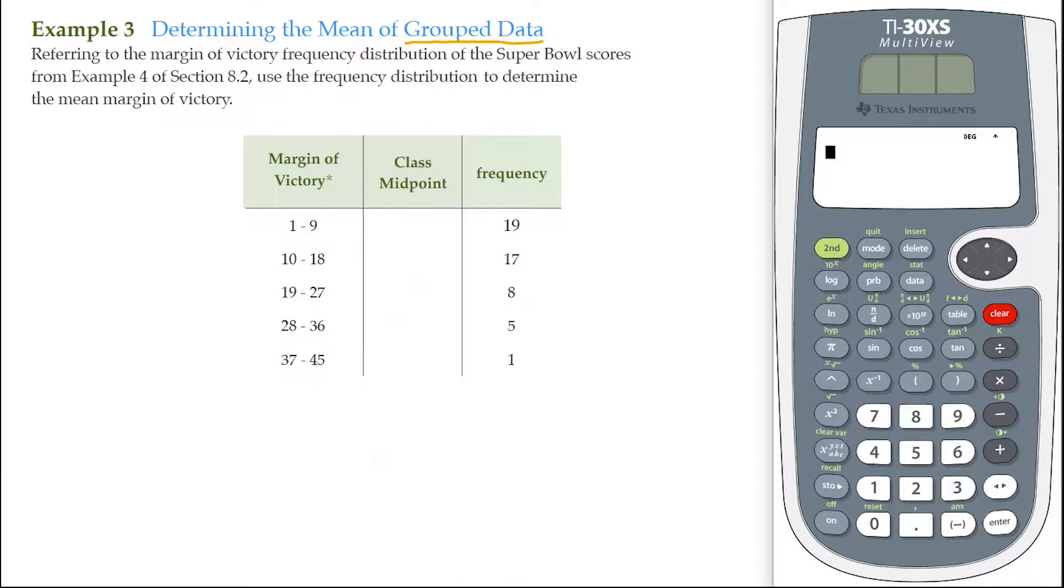In this particular problem, it says referring to the margin of victory frequency distribution of the Super Bowl scores from example 4 of section 8.2. That was the previous section. If you remember, we went ahead and we made a frequency distribution of the margin of victory for all those Super Bowls. It says use the frequency distribution to determine the mean margin of victory. So now we want to find the average margin of victory.